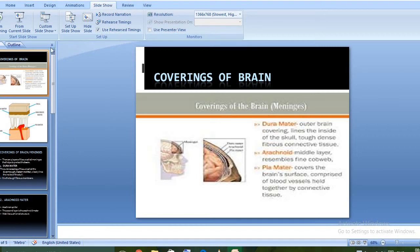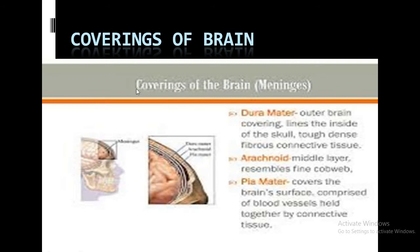Good morning students. Today we start with the coverings of the brain. There are three basic coverings of the brain: dura mater, arachnoid mater, and pia mater. The coverings of the brain are also known as meninges. Dura mater is the outermost covering of the brain, which lines the inside of the skull.